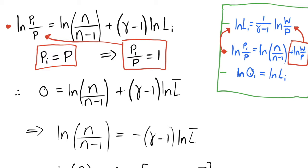Substituting the symmetric equilibrium condition in, we take the natural log of one which equals zero. So our equilibrium condition is that zero equals the natural log of the markup plus the elasticity of labour supply minus one, multiplied by the natural log of l-bar — our equilibrium labour. We can think of our equilibrium quantities as our target output, which comes with a target labour supply fixed at l-bar in the long run.